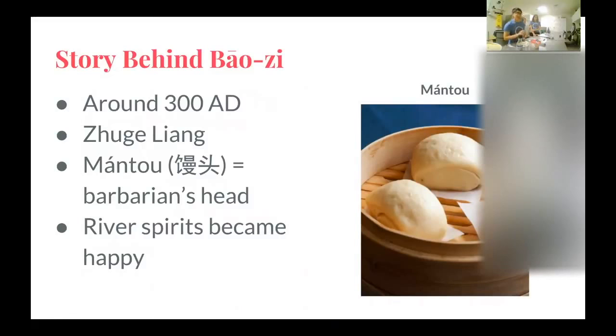And the way to do that is to throw in 49 heads into the river. Now Zhuge Liang is not a mean person, and he did not want to do that. So he got all his men to make dough and shape them into a barbarian's head, and then they cooked it and threw them into the river. And then they were able to cross the river and do their thing.